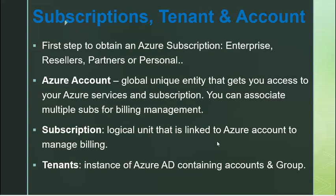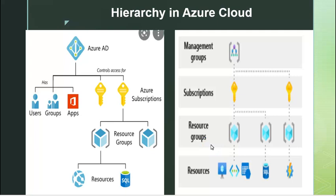Now I'll explain the Azure hierarchy — how the organization hierarchy can be defined and what is the top level. The top level hierarchy in Azure cloud is the root management group, and then further down we have management groups, subscriptions, resource groups, and resources. I will talk about each of these in detail.